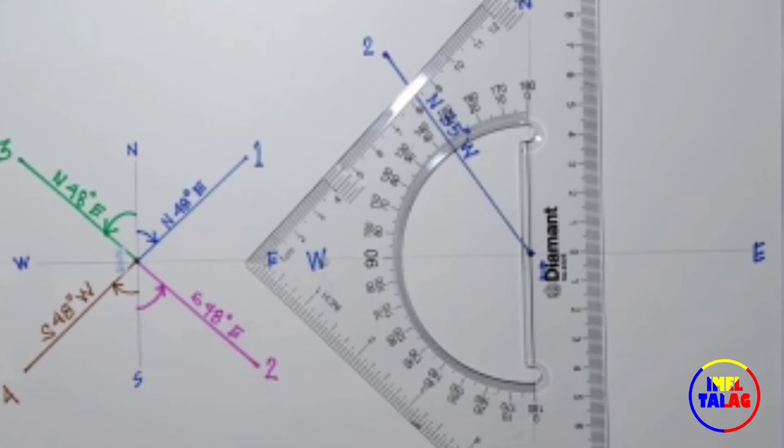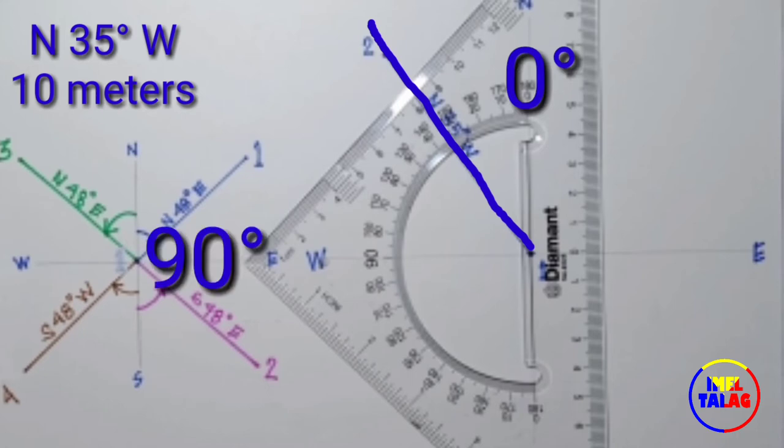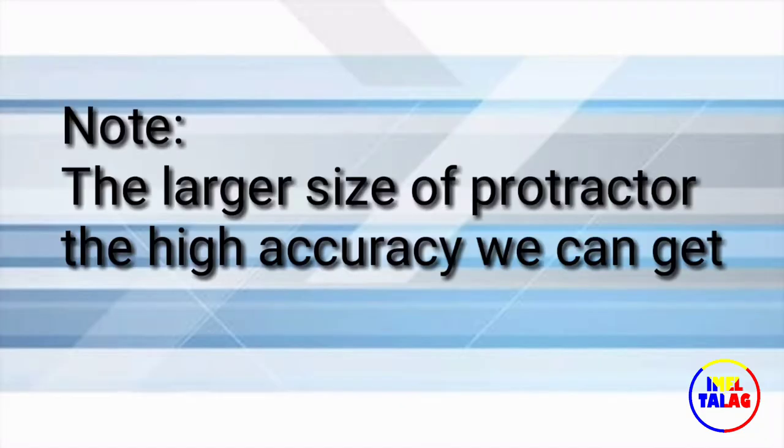For example, if the line direction goes 35 degrees northwest with a distance of 10 meters, the zero degrees is placed on the north and the 90 degrees is placed on the west, and then count up from zero degrees to 35 degrees. Note: the larger size of protractor, the higher accuracy we can get.